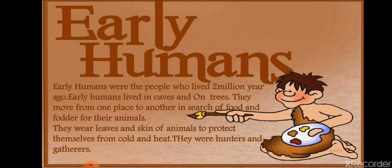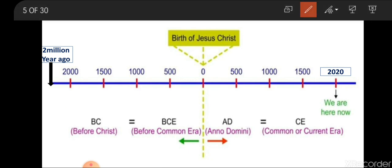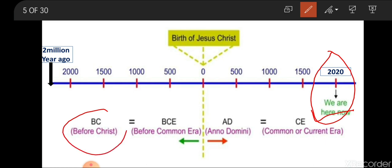We are named as Homo sapiens. As I explained in the previous chapter about the timeline — BC means before Christ or before common era, and AD means anno domini or current era. We are going to start from the beginning, that is from 2 million years ago. We are going to learn our ancient history starting from 2 million years ago, even before Jesus Christ was born.